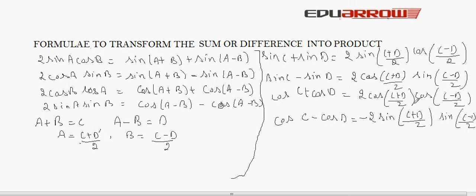These formulas are very simple to learn. We just replace A+B with C and A−B with D. So in sin(C+D), we replace with (C+D)/2 and (C−D)/2 respectively. By replacing in all four equations, we get four new formulas that allow us to convert a sum or difference of trigonometric ratios into a product.